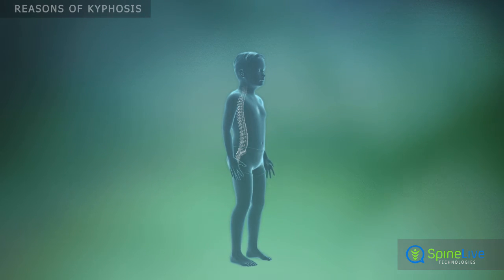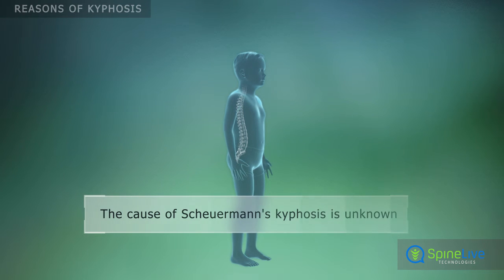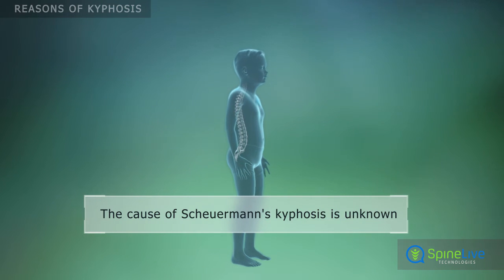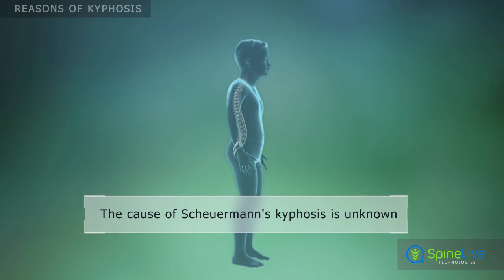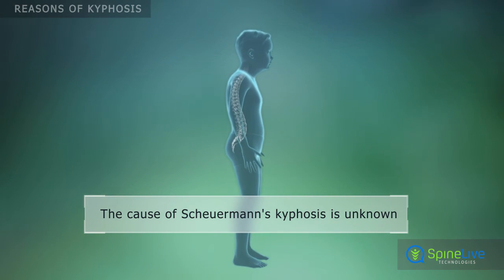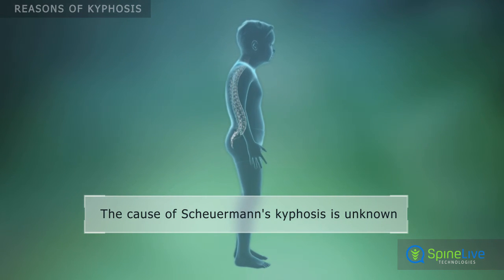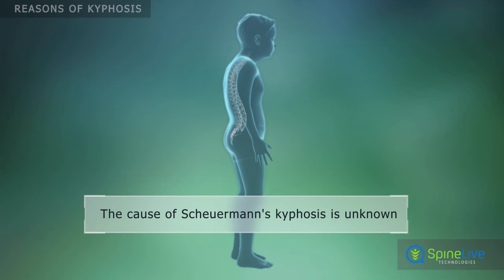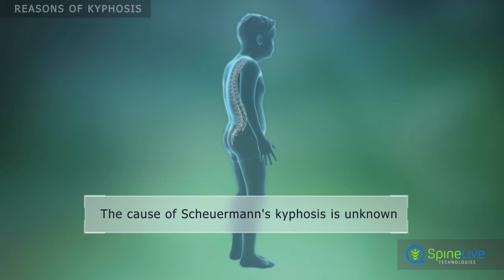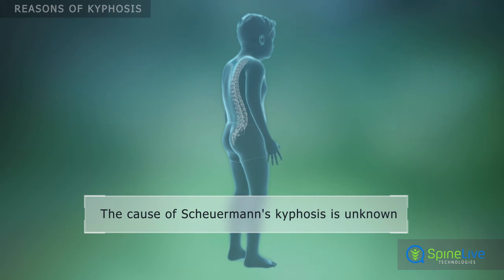Kyphosis of unknown etiology which begins in adolescence before puberty is called Scheuermann's disease. It is more common in boys and continues to worsen with age.